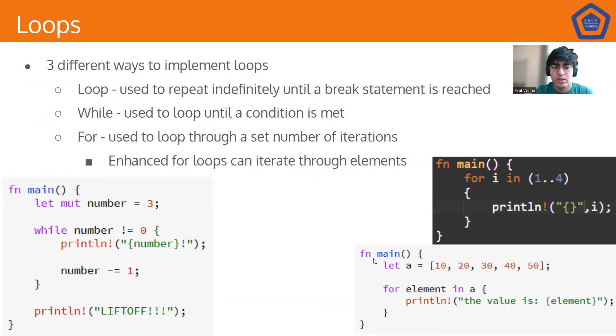Next, let's talk about loops. There are three main ways to implement loops. The loop statement, which is used to repeat indefinitely until a break statement is reached. A while loop, which is used to loop until a condition is reached. And a for loop, which is used to iterate through a certain number of iterations. You can see, let mut number equals 3, while number is not equal to 0, print number, number minus equals 1, and then at the end, print liftoff.